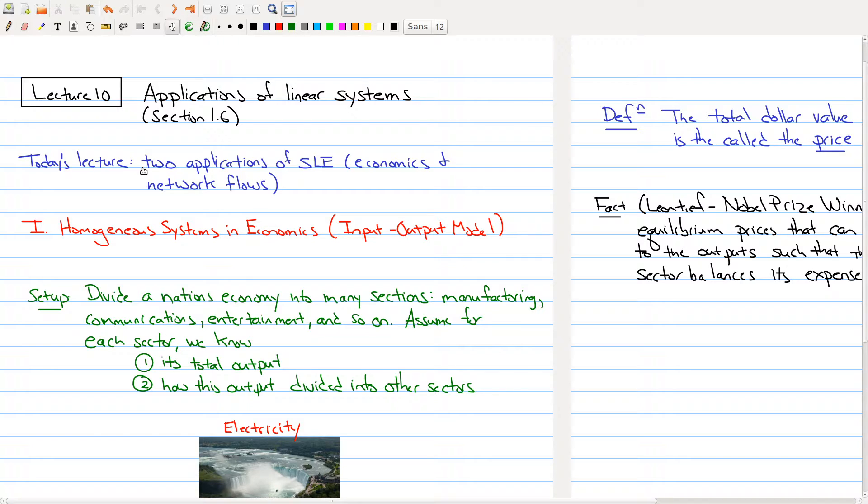The first thing we're going to look at is a homogeneous system in economics, in particular what's called the input-output model. Here's the setup. We're going to divide a nation's economy into many sections or sectors: the manufacturing sector, the communication sector, the entertainment sector, and there could be other things like agricultural and so on. What we want to do is assume that for each of these sectors, we know its total output and how this output is divided into other sectors.